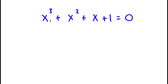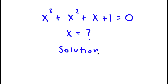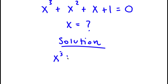I have x to the power of 3 plus x to the power of 2 plus x plus 1 is equal to 0. I want to find the value of x. So for my solution, I start with x³ + x² + x + 1 = 0.